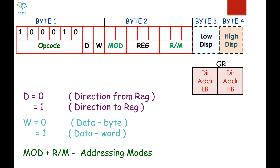What you see in this slide is an instruction format of the 8086 microprocessor. This is a 16-bit instruction format. Your assembly instructions will be converted into a machine instruction, and that machine instruction format is the one which is shown here.